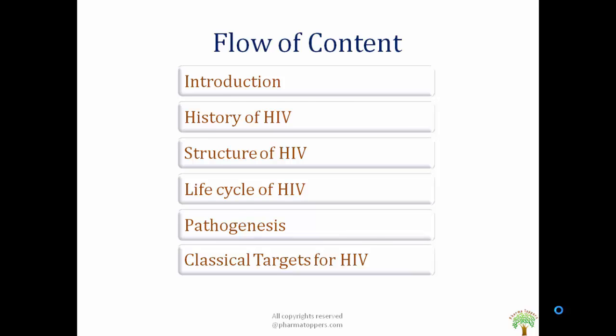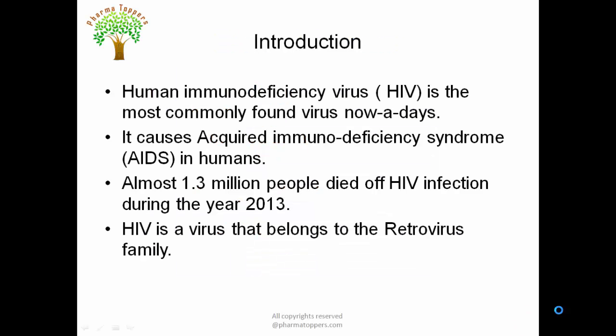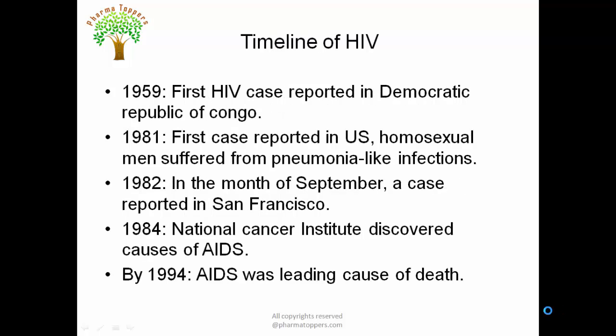HIV is Human Immunodeficiency Virus and it causes Acquired Immunodeficiency Syndrome in human beings. This virus belongs to the retrovirus family, meaning it carries RNA as its genetic material. As per recent reports from 2013, almost 1.3 million people died of HIV, which shows how fatal the infection is.